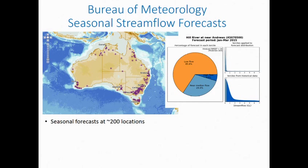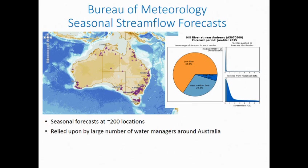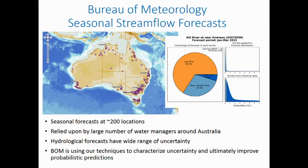An example of a service that relies on probabilistic hydrological model predictions is the Bureau of Meteorology Seasonal Streamflow Forecasts. This system provides forecasts at about 200 locations around Australia. You can go to their website, click on any of those dots on the map, and be provided with forecasts for streamflow over the coming season. These forecasts are relied upon by a large range of water managers around Australia. In an ARC linkage project we've been using our techniques to help characterise the uncertainty in these predictions.